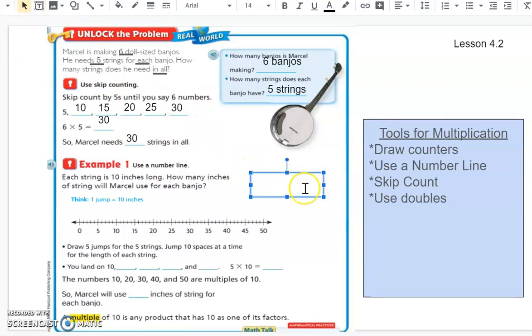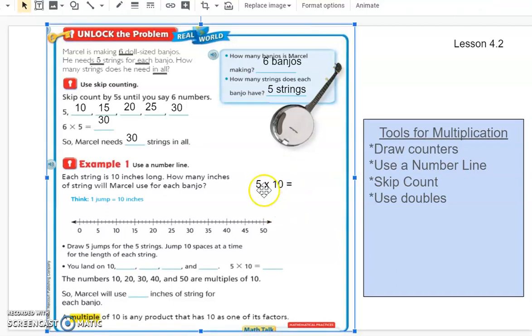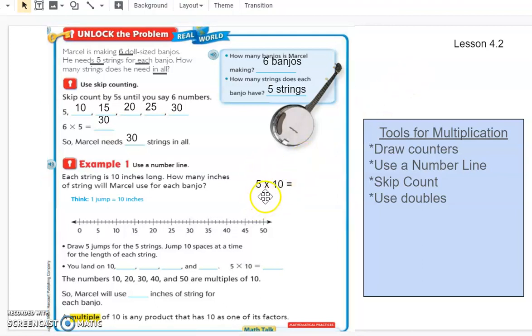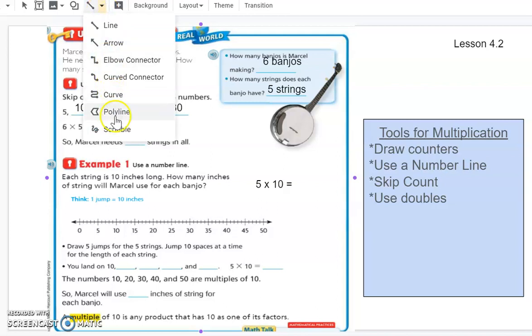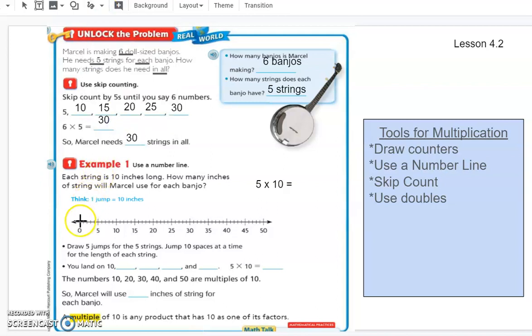So if I'm looking up here, I know that he needed 5 strings. And now I know that they each are 10 inches long. So here are my 5 groups, my 5 strings, and they're each 10 inches. So I have to figure out the product there. We have our 2 factors, 5 and 10. So just as we learned where we have 5 groups of 10, we can also think of it as 5 jumps with 10 in each jump.